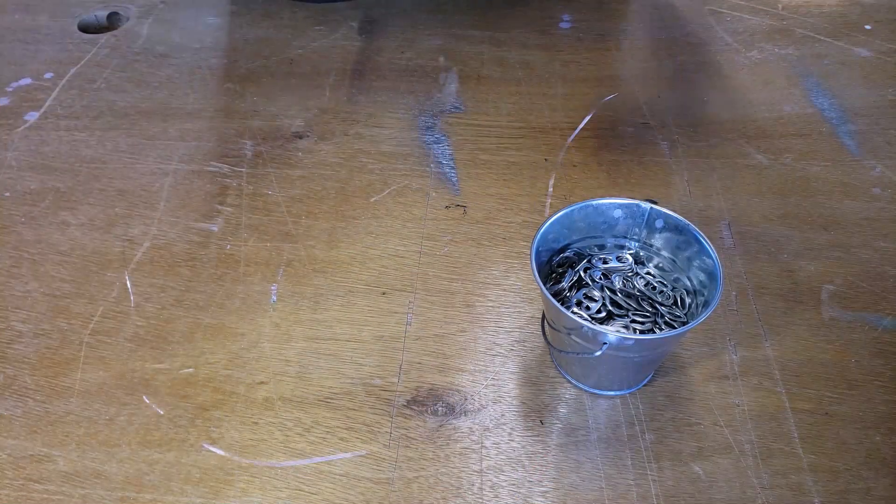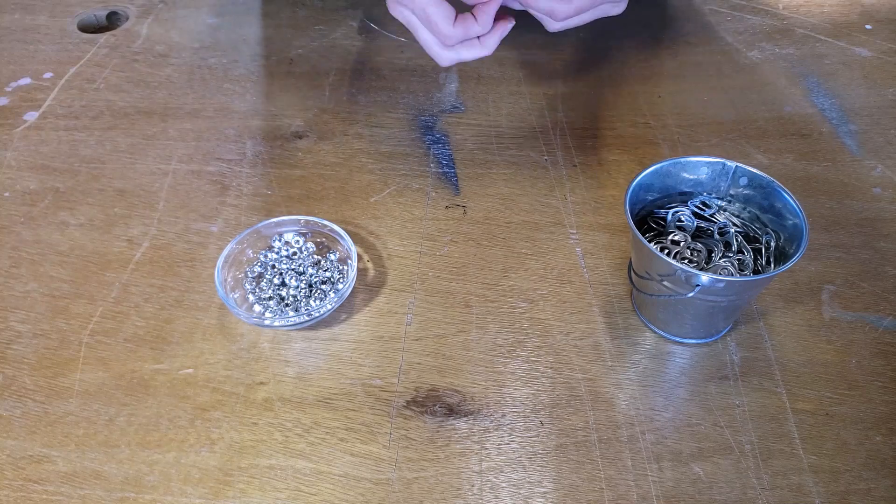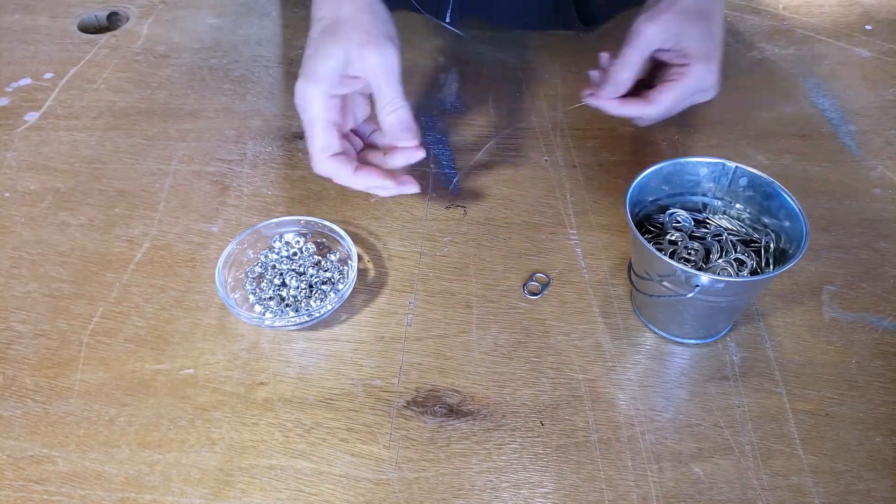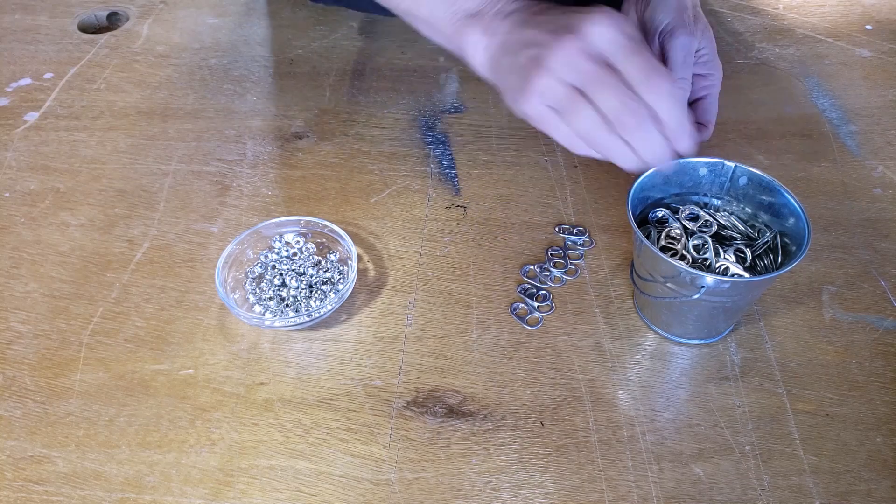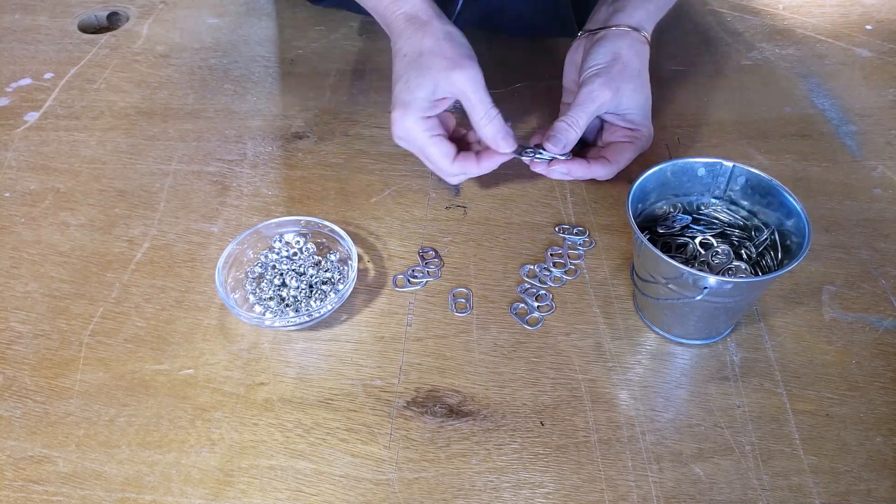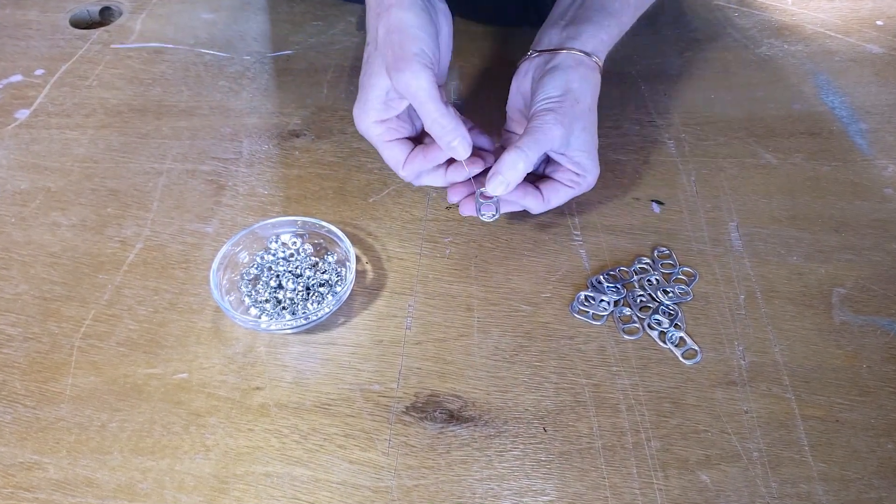For the next project I'm going to be making some Christmas tree ornaments from pull tabs and I'm starting with a long strand of 32 gauge silver wire which is a very fine wire. You can use heavier wire if you want to but you want to use something that's very flexible and easy to work with.